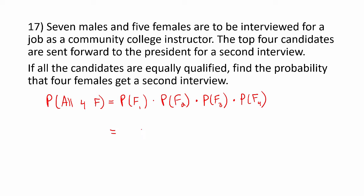What is the probability the first applicant sent forward is a female? There are five females out of 12 applicants. Moving to the second applicant, we have four females out of the remaining 11 applicants. We're going to use three out of ten for the third, and two out of nine for the fourth.